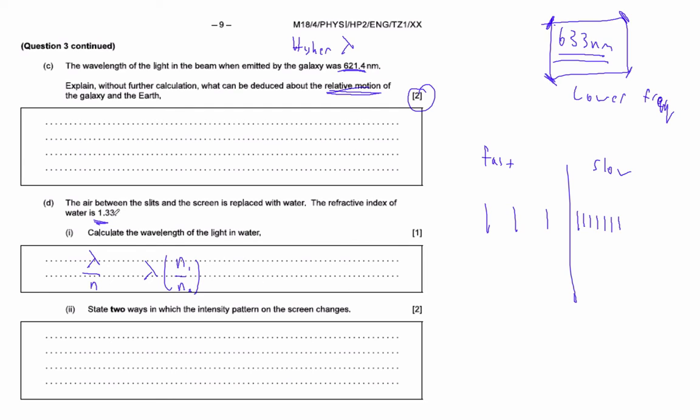So anyway, that's the simplest thing. Just take that 633 divided by 1.33. And we've done these. You can do it the hard way or you can do it the easy way.